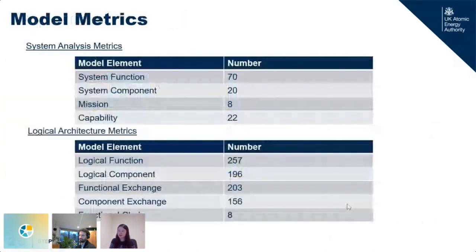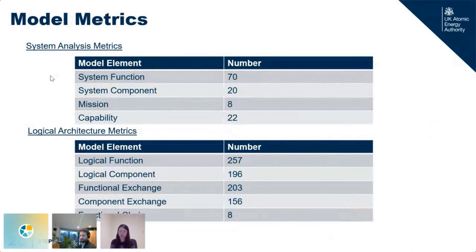Looking at model metrics for the system and logical layers: there is a large number of system and logical functions as well as a large number of logical components, indicating this is a highly complex system. The relatively low number of system missions and functional chains means we can further improve the top-down approach by taking on more missions and capabilities at the system layer, translating them to functional chains, and propagating to the logical layer.